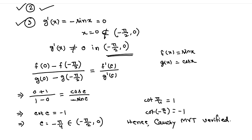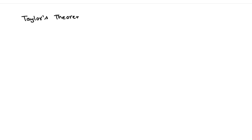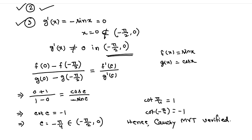Let's briefly note that this was a very simple Cauchy MVT problem. Our next topic will be Taylor's theorem, also called the generalized mean value theorem, which I will discuss in the next video. You can try your textbook problems, and if you have any doubts, you can ask in the comment section. Thank you so much.